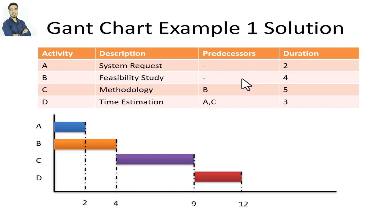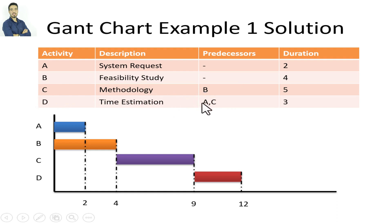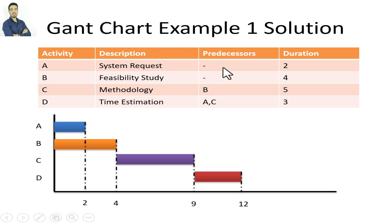For example, activity C depends on activity B, and activity D depends on activity A and activity C. Activities A and B don't depend on any other activity — as you can see, there are no predecessors listed for those two activities.